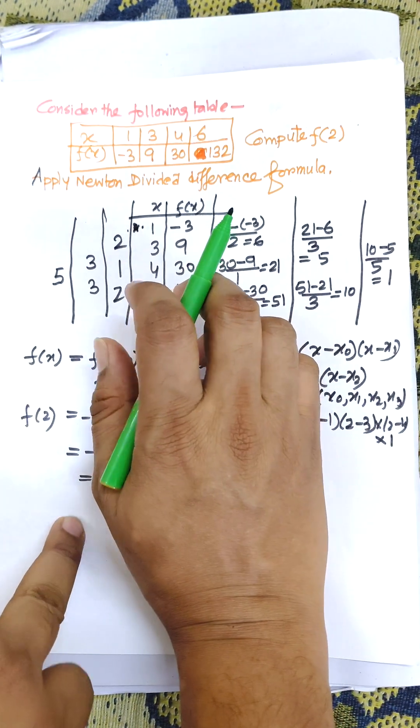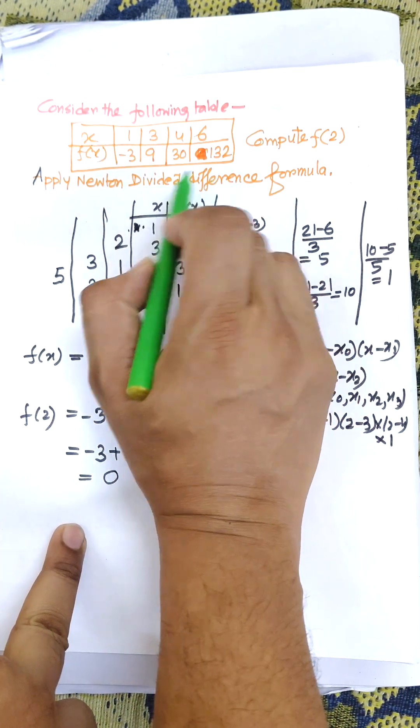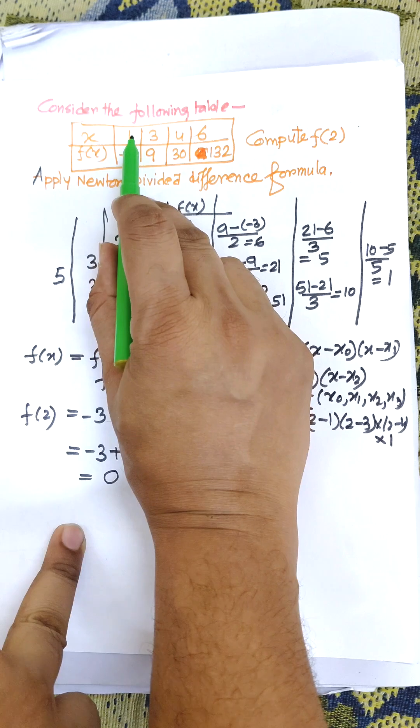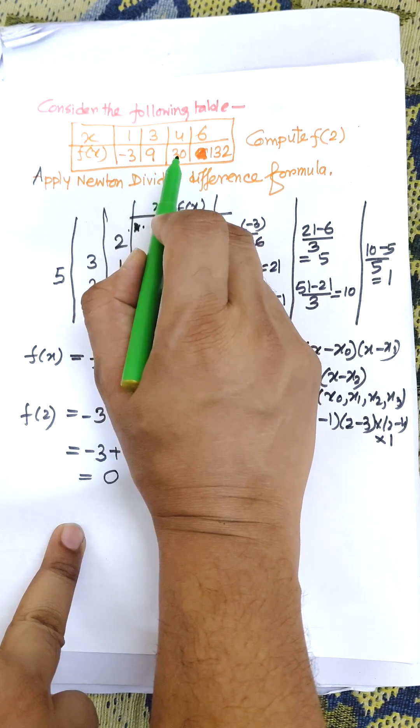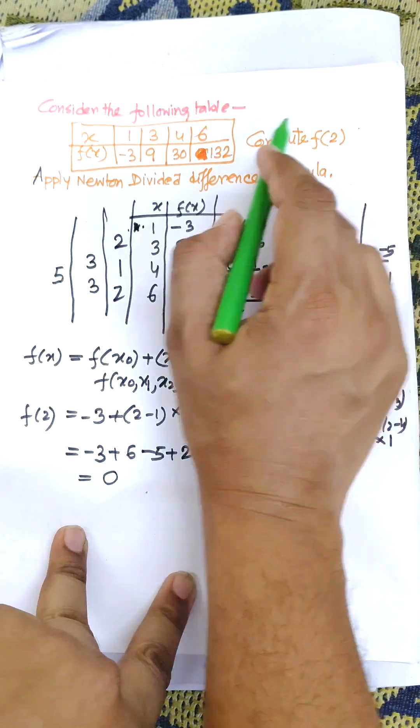Hi everybody, in this video I am going to apply Newton divided difference formula for the following table. The x values are 1, 3, 4, 6 and f(x) values are -3, 9, 30, 132. Compute f(2). First of all, you need to write the table.